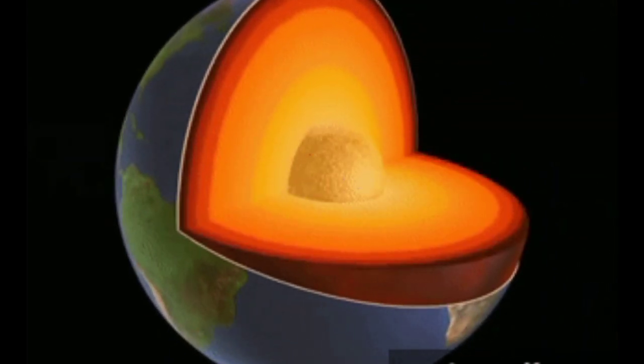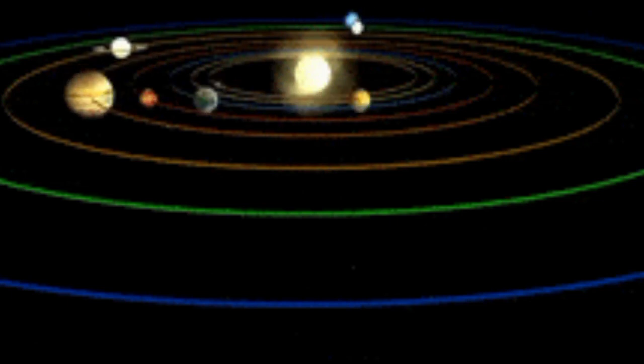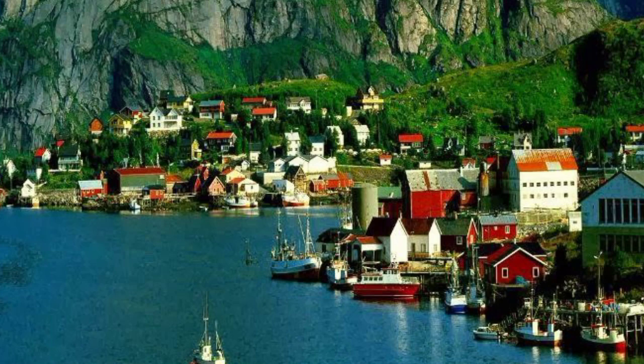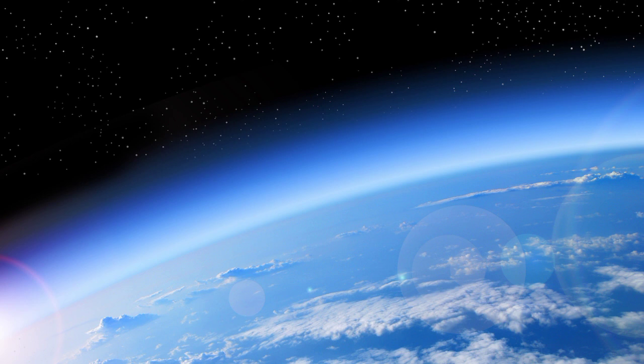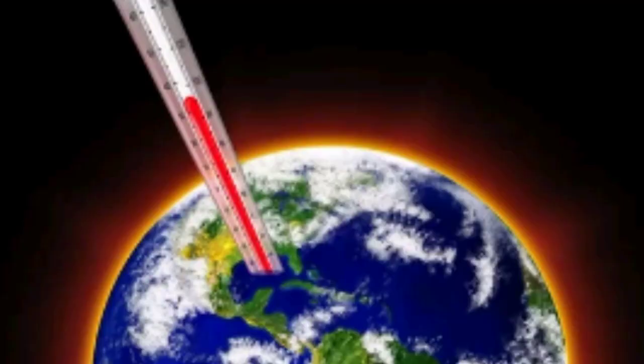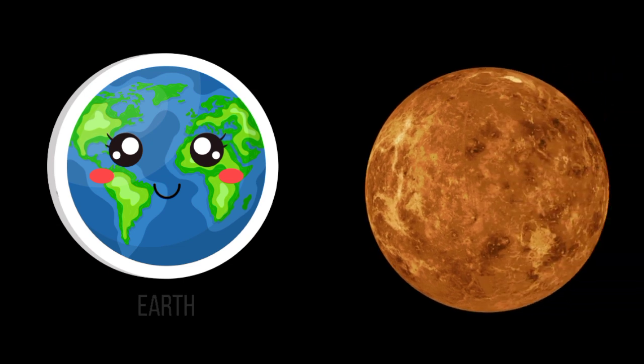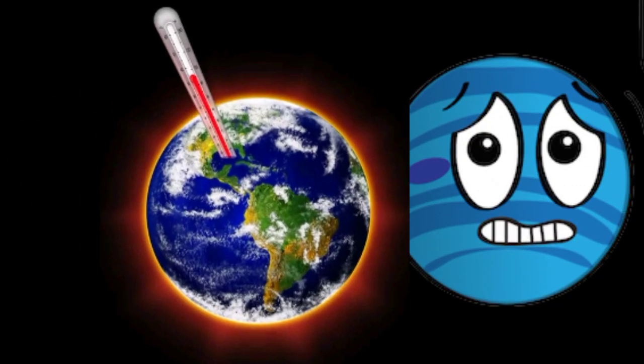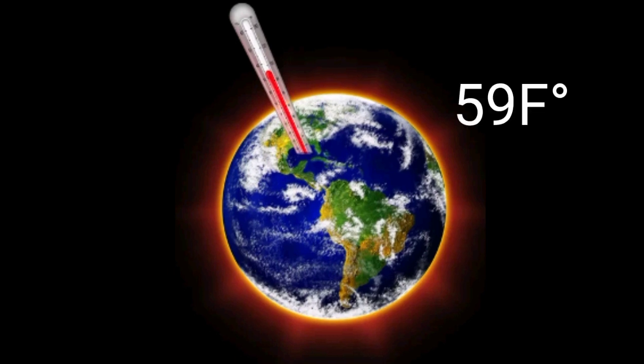Earth is the only planet in the solar system that can support life. Life is possible on Earth because the planet has water on its surface and oxygen gas in its air. Earth also has the perfect range of temperatures for life. It is not too hot like Venus and not too cold like Neptune. The average temperature on Earth is about 59 degrees Fahrenheit.